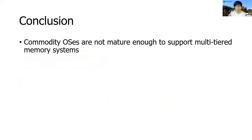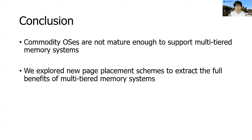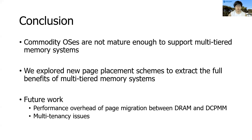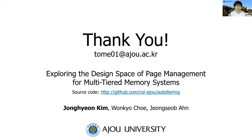Let me conclude my talk. We identified that commodity operating systems are not mature enough to support multi-tiered memory systems. So we explored new page placement schemes to extract the benefits of multi-tiered memory systems. With simple and straightforward schemes, we achieved significant performance speedup for diverse benchmarks. As future work, we will further optimize the performance overhead while migrating pages from DRAM to DCPMM. Also, we are investigating multi-tiered issues — when utilizing such multi-tiered memory systems in public cloud environments, how can it support the fairness of memory allocation? This is one of the remaining challenges. Thank you for watching.